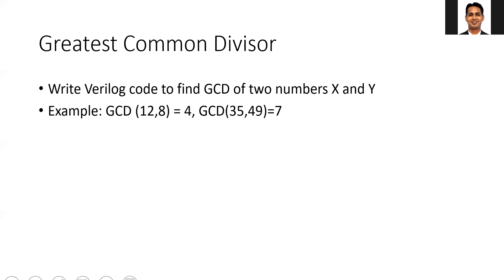For example, here I need to find the GCD of 12 and 8. The greatest common divisor of 12 and 8 is 4. Similarly, GCD of 35 and 49 is 7. In this lab, we need to write Verilog code which takes two input numbers and outputs the corresponding GCD value.